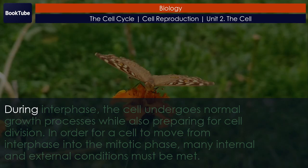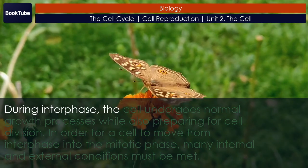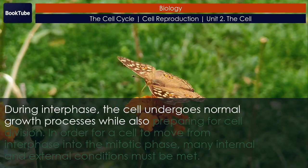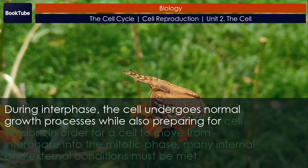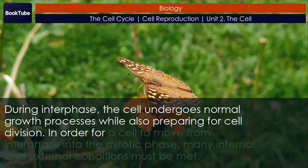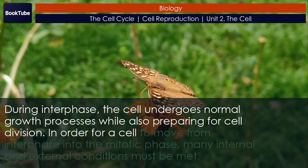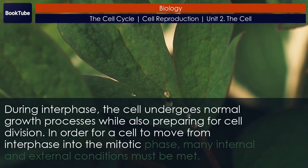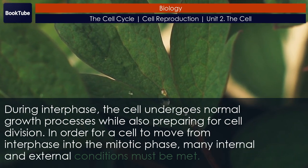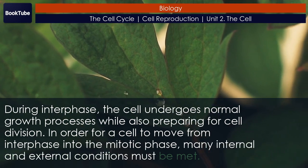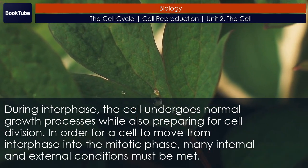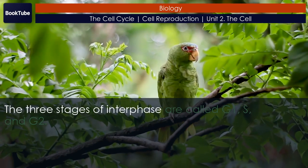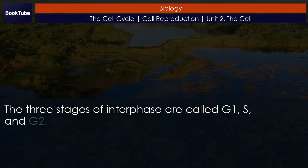Interphase. During interphase, the cell undergoes normal growth processes while also preparing for cell division. In order for a cell to move from interphase into the mitotic phase, many internal and external conditions must be met. The three stages of interphase are called G1, S, and G2.